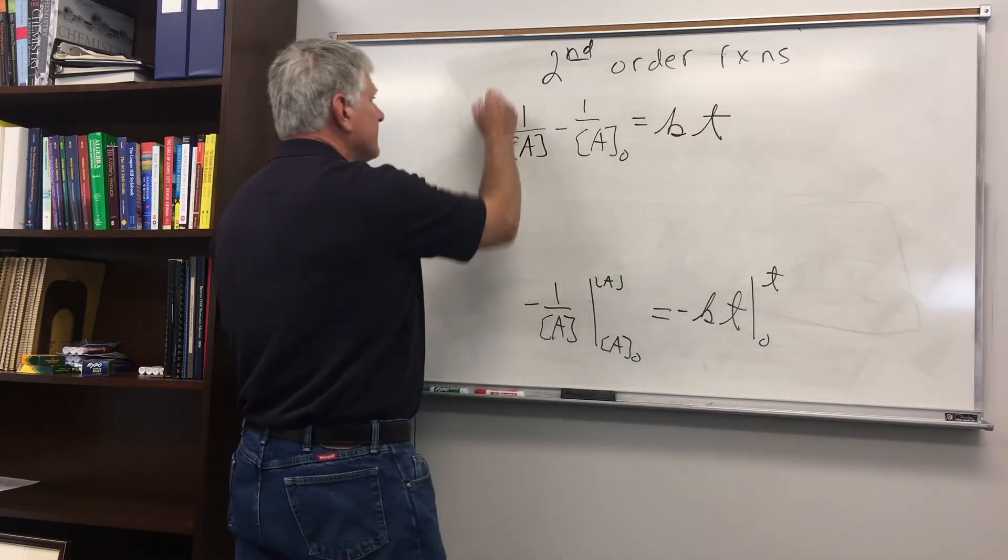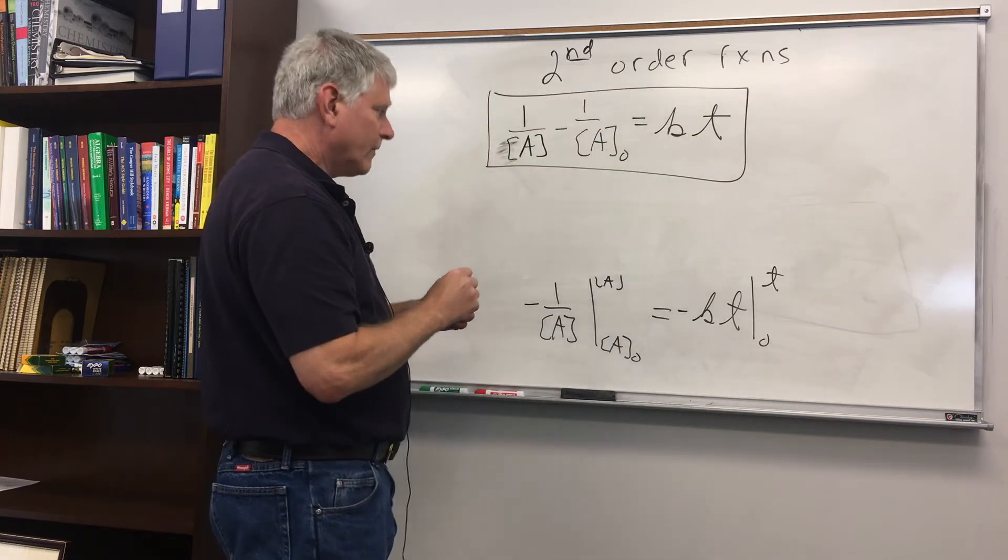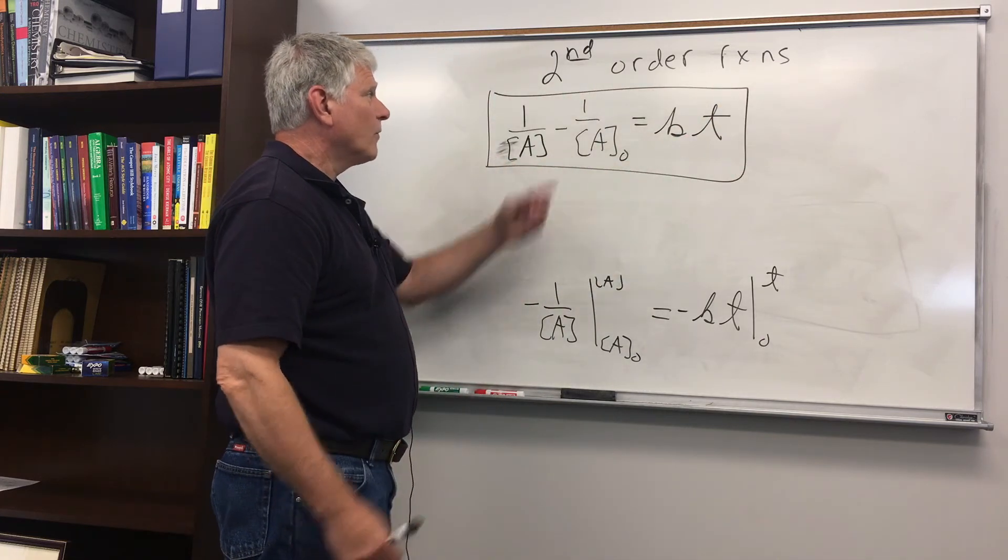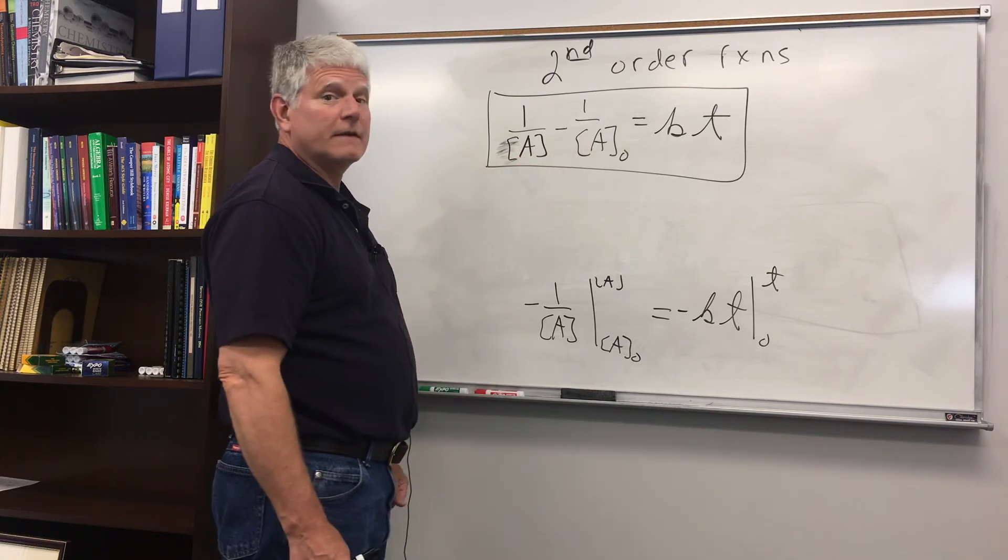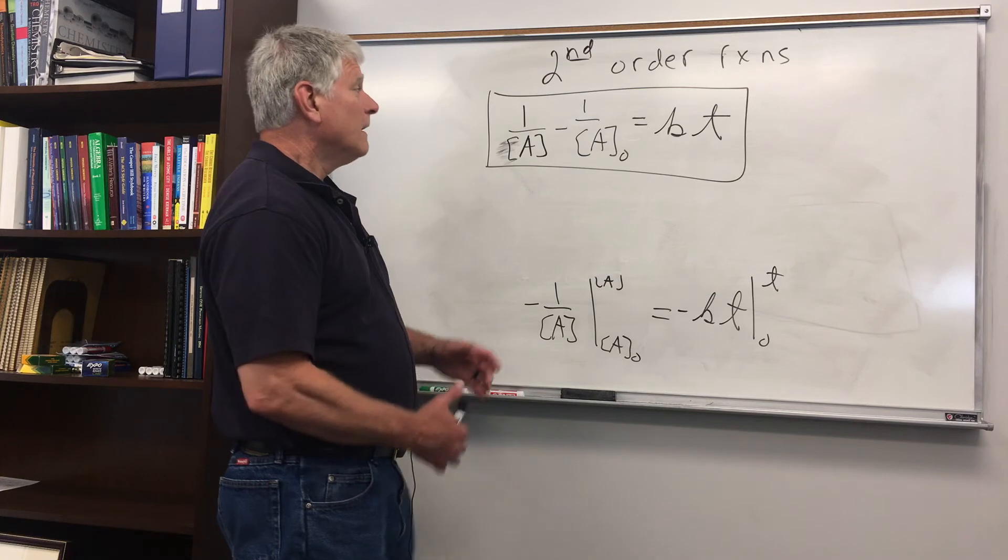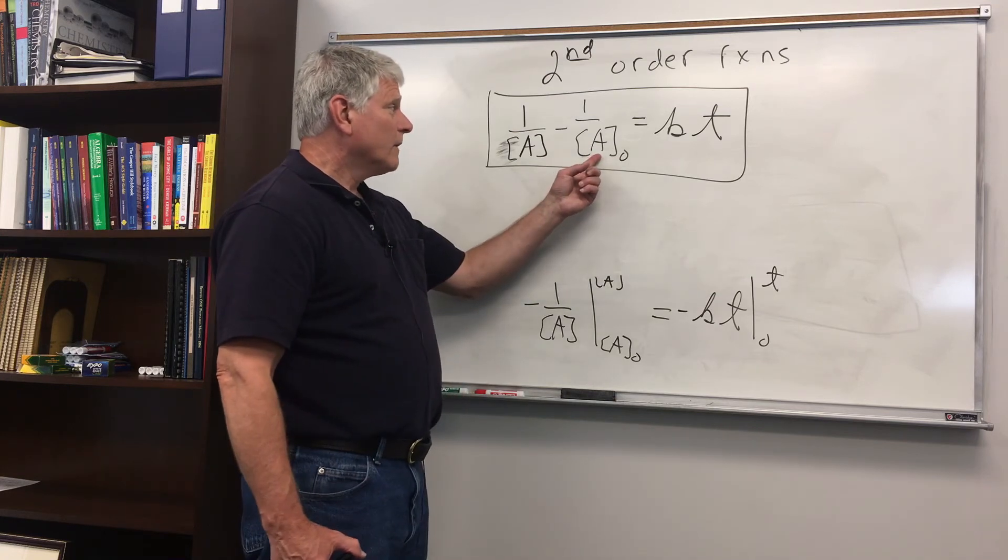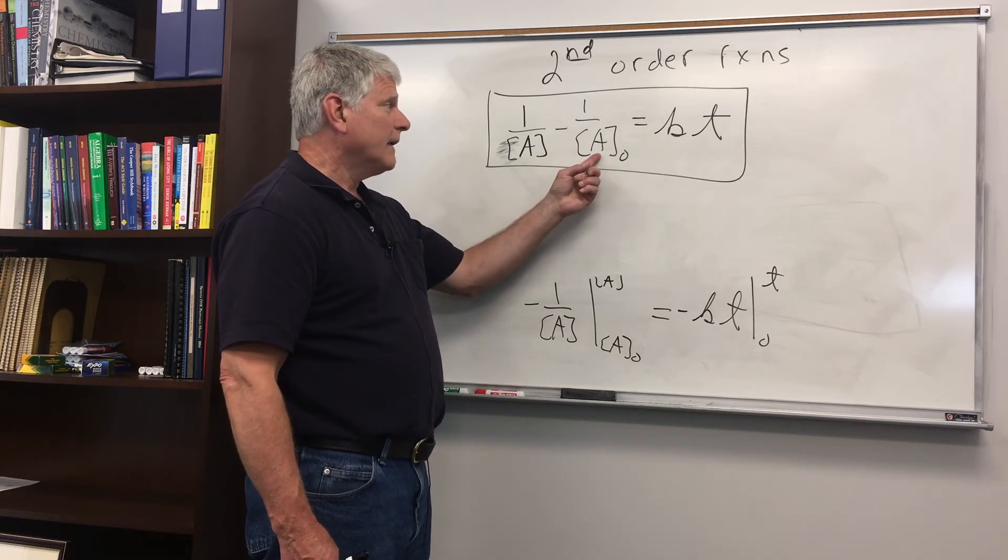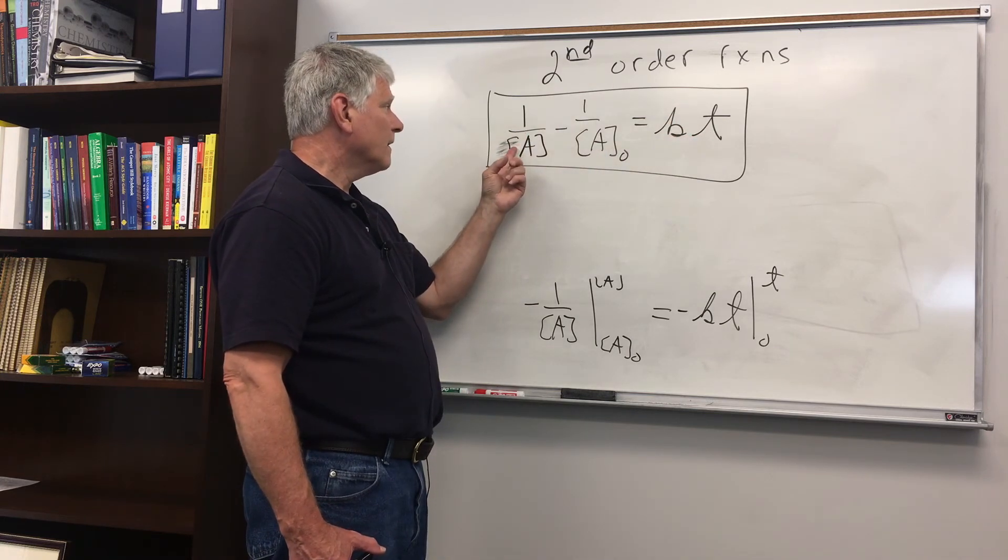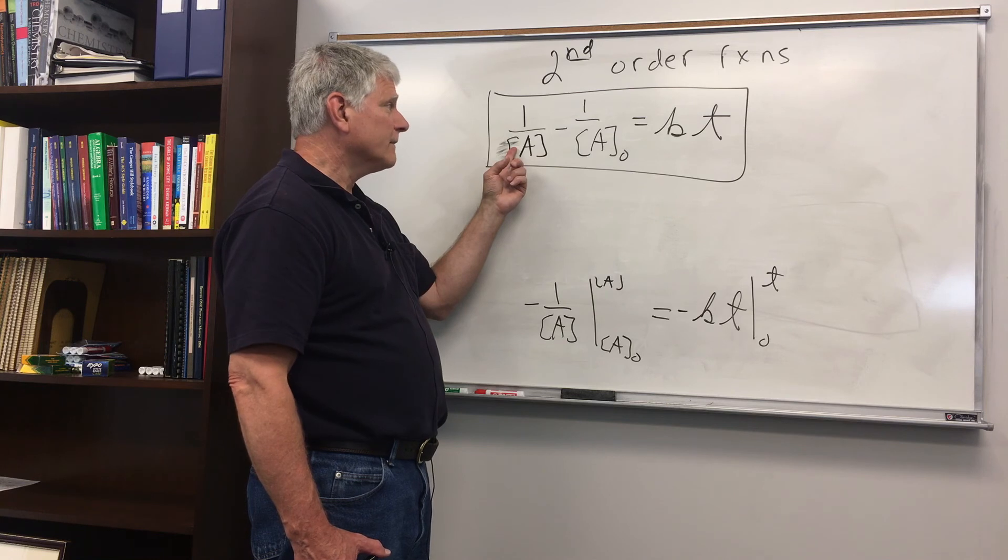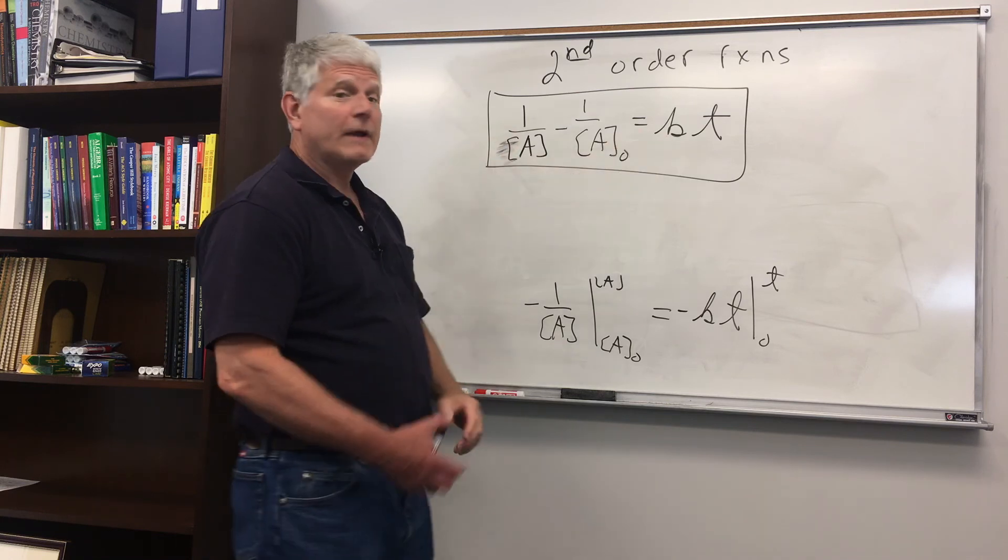So this is the integrated rate expression for a second-order reaction in a single reactant. And you have the initial amount of the reactant A and at time t you have the amount of A that's left and here we have the rate constant.